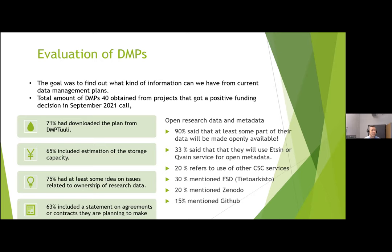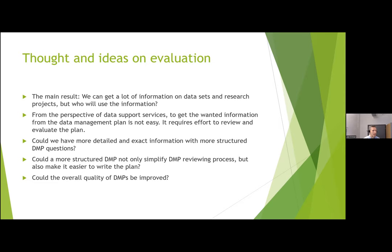30% mentioned FSD — the Finnish Social Science Data Archive — as data in surveys and interviews is common across disciplines. 20% mentioned Zenodo and 15% mentioned GitHub. The main result was that we can get a lot of information on datasets and research projects, but the question is who will use this information. Most of it is sent as an attachment to the funder's system and in many cases that is the end of it.